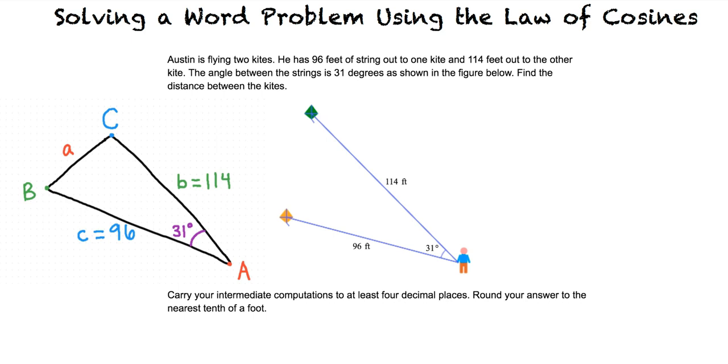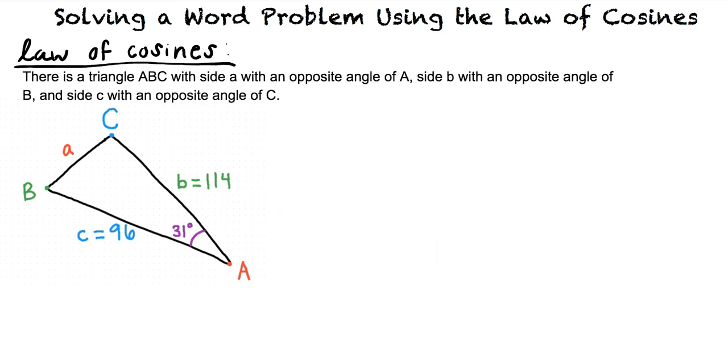What is the law of cosines? The law of cosines states that there is a triangle ABC with side A with an opposite angle of A, side B with an opposite angle of B, and side C with an opposite angle of C. We can see this demonstrated in the figure we have drawn below, as the side that is opposite the angle has the same letter.